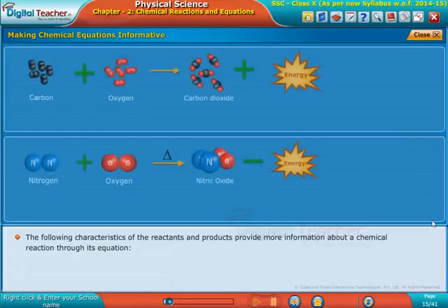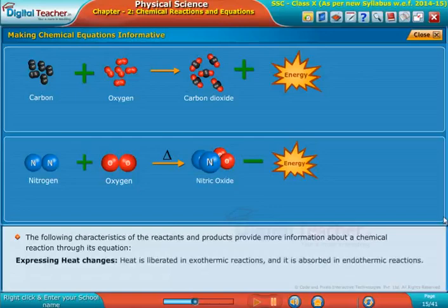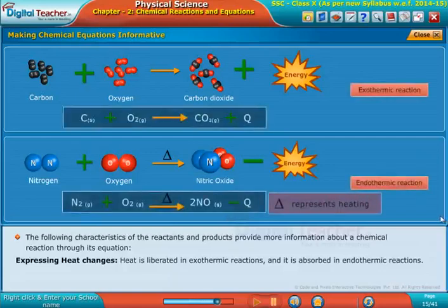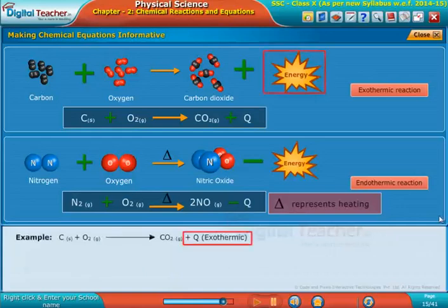The following characteristics of the reactants and products provide more information about a chemical reaction through its equation. Expressing heat changes: heat is liberated in exothermic reactions and it is absorbed in endothermic reactions. The examples of these reactions are shown on screen.